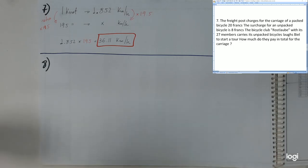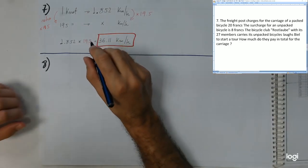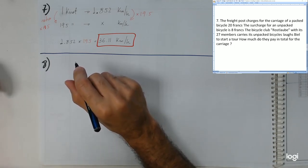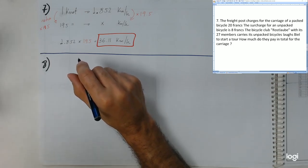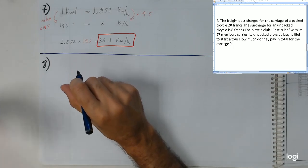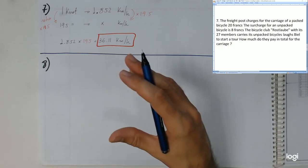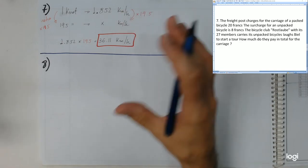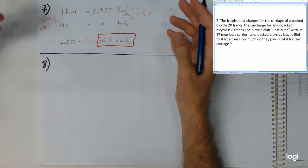Let's talk now about the bicycle problem. This one is also easy because when they have to transport the bicycle it just needs 20 francs to transport, but what happens when the bicycle has a surcharge? When the bicycle is not packaged, it is just thrown away.